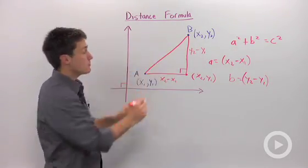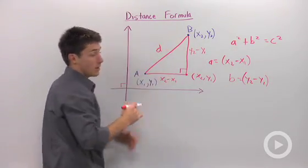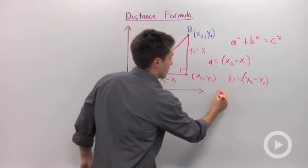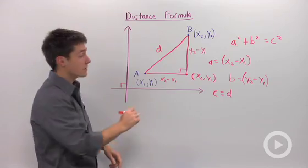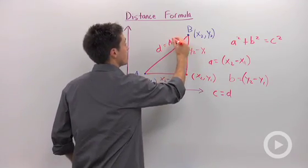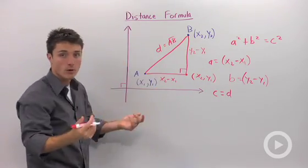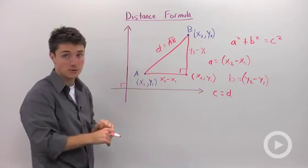And the hypotenuse C we could say is D, our distance. Or if you wanted to, you could say that this is line segment AB. Either way, you're trying to find your hypotenuse here.